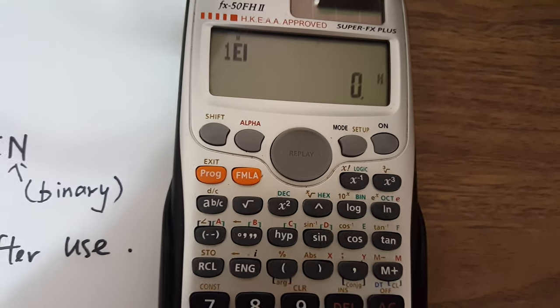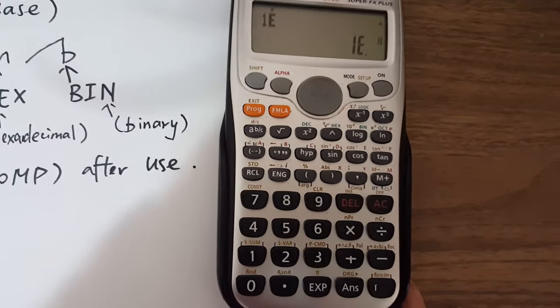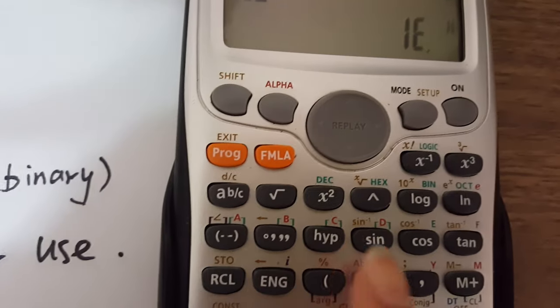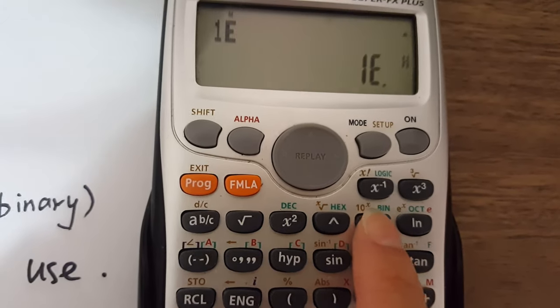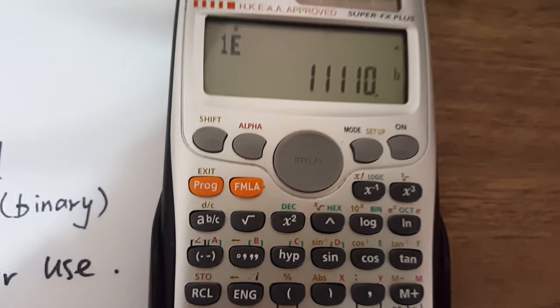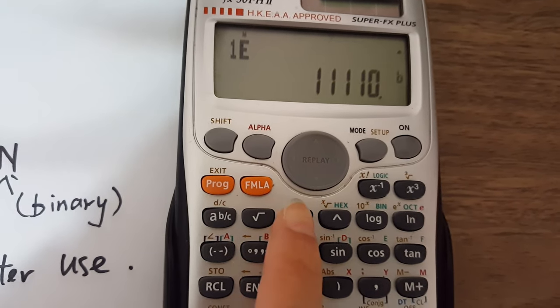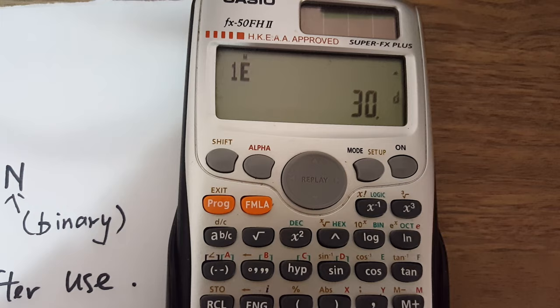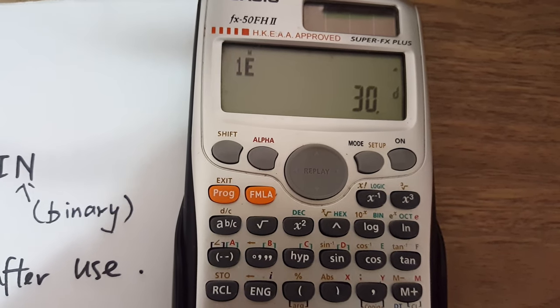How about I press 1E? Now I want to change it to binary. It shows the same result. How about denary? It gives you 30.